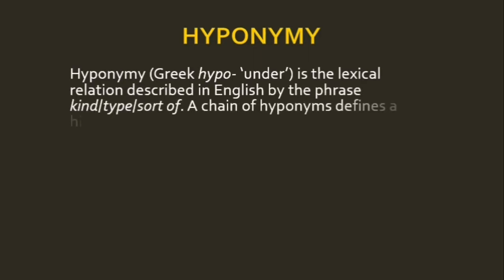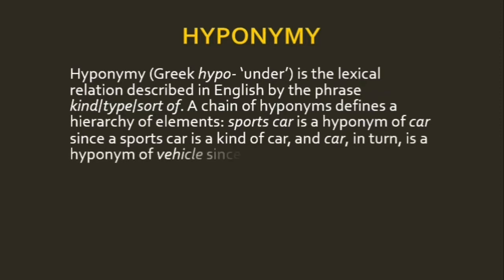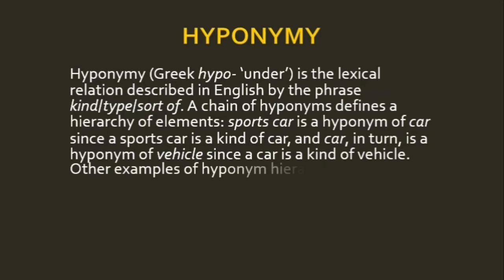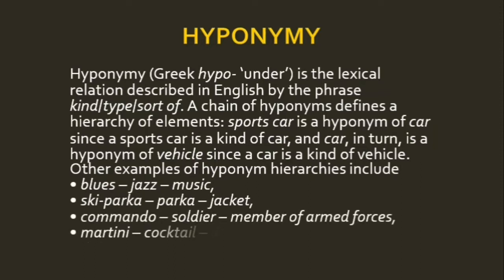Hyponymy describes a hierarchy: a sports car is a hyponym of car since a sports car is a kind of car, and car in turn is a hyponym of vehicle. Other examples include: blues and jazz are kinds of music; parka is a kind of jacket; commando is a kind of soldier and a member of armed forces; martini is a kind of cocktail and cocktail is a kind of drink. These hyponymic hierarchies show that if someone is a commando, they are a kind of soldier and a member of the armed forces.